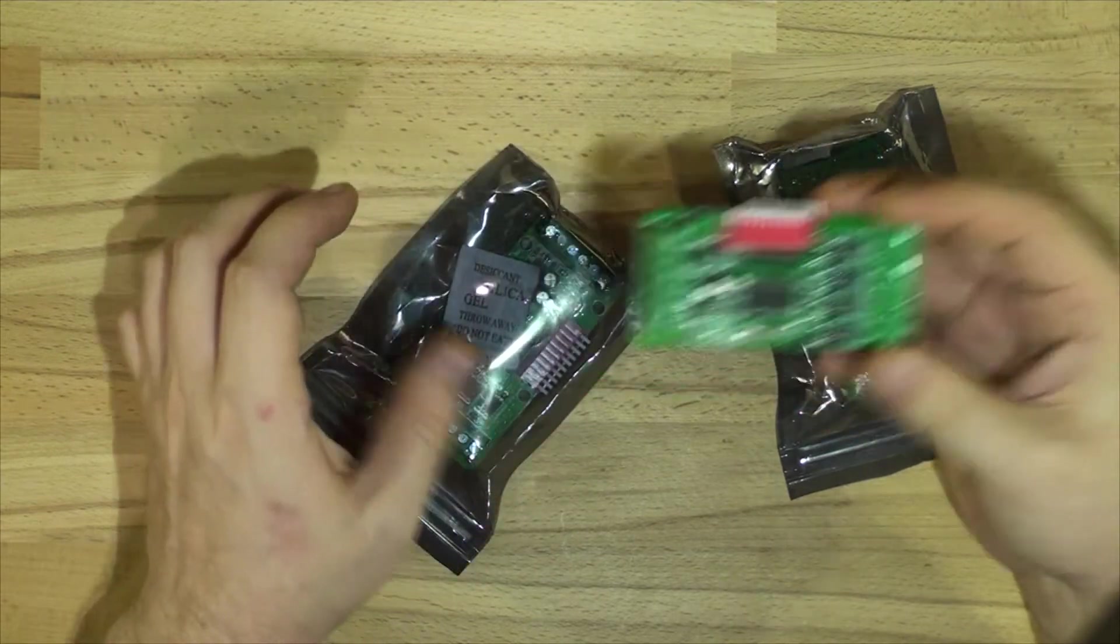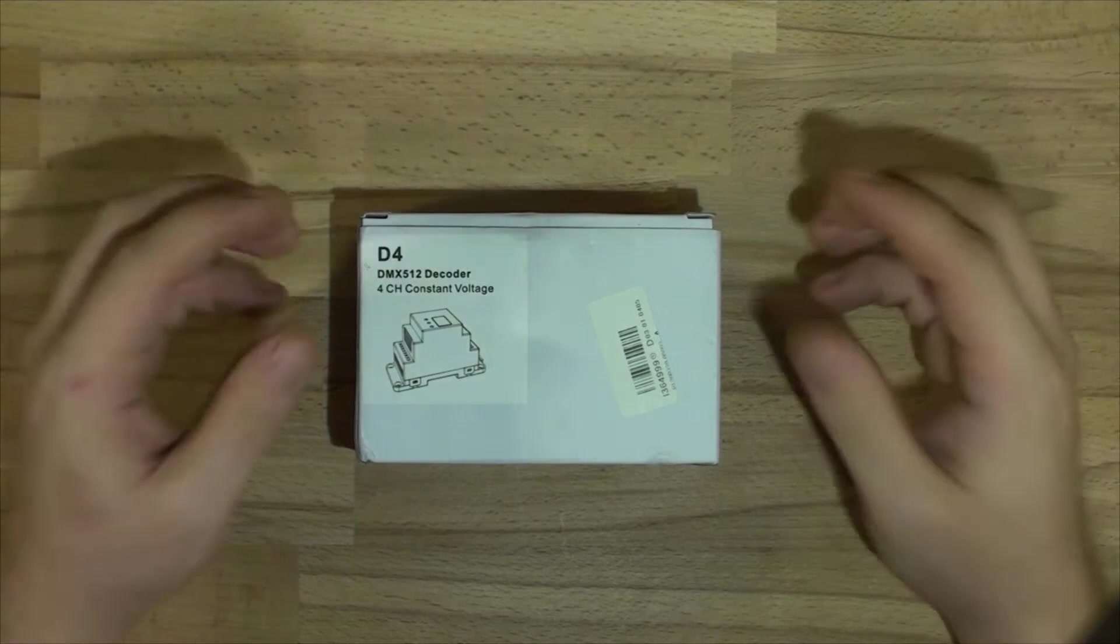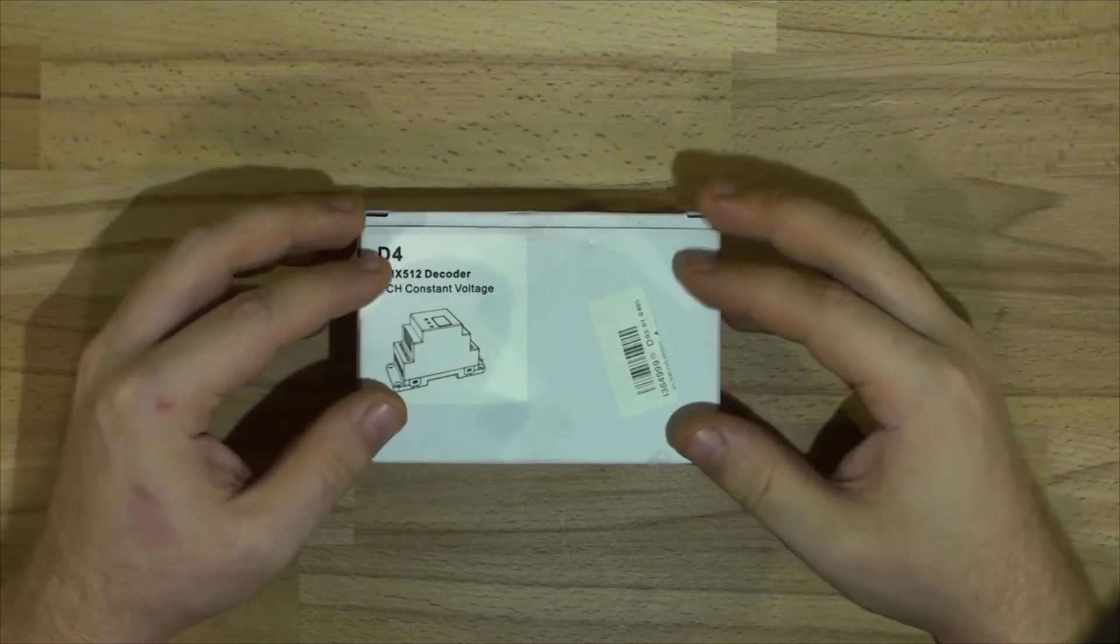While I was hunting for those ones, which are about 20 bucks on eBay, I found another DMX decoder that was very interesting. I didn't know you could get one, so that's why I'm making this video just in case there's a lot of stuff on eBay that you can find but you don't know exists.